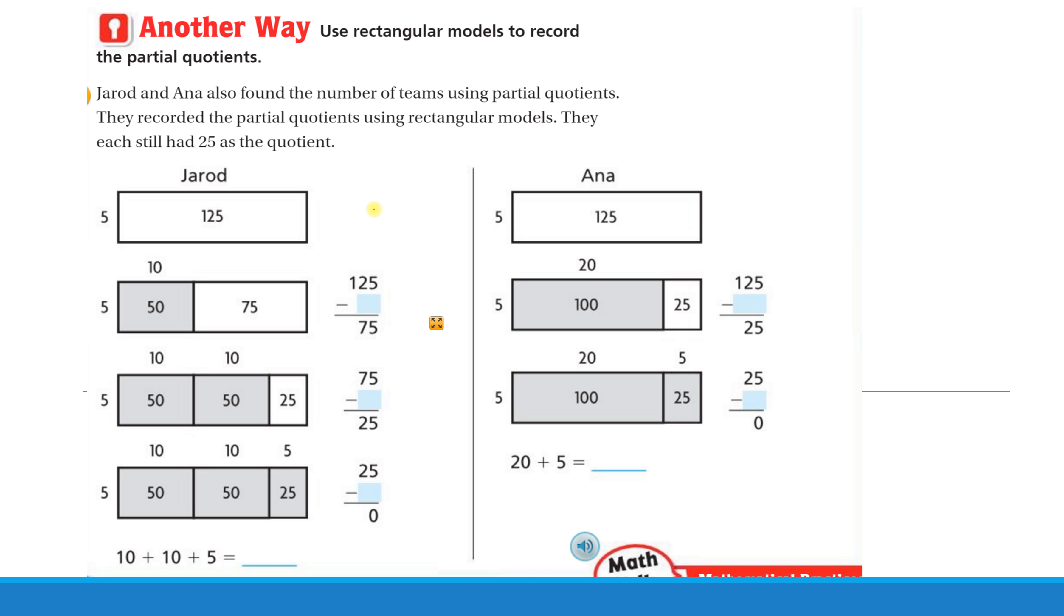All right, we're still on Chapter 4, Lesson 8, now we're on to page 174, and this is just another way. This is using rectangular models to record the partial quotients, which is very similar to what we did with multiplication.